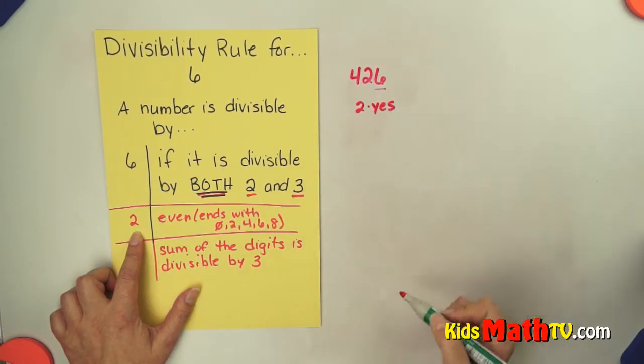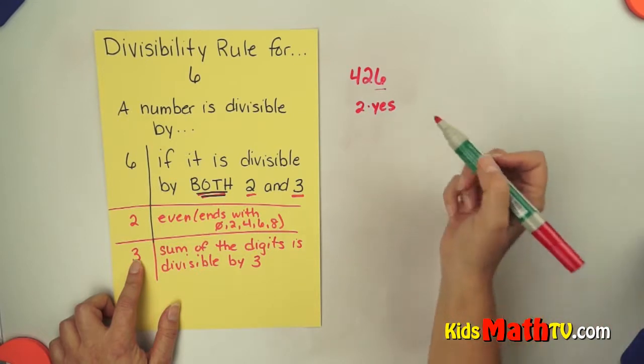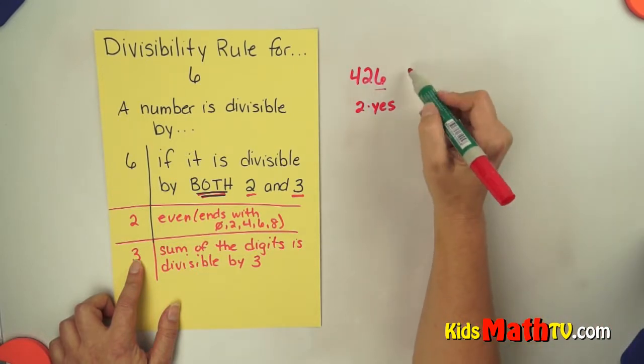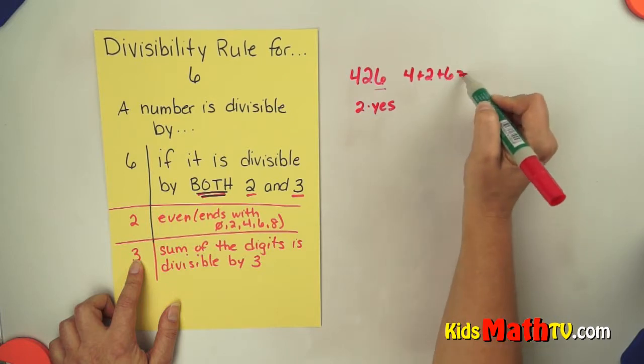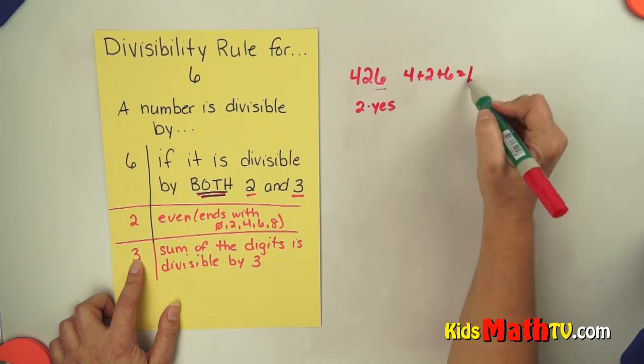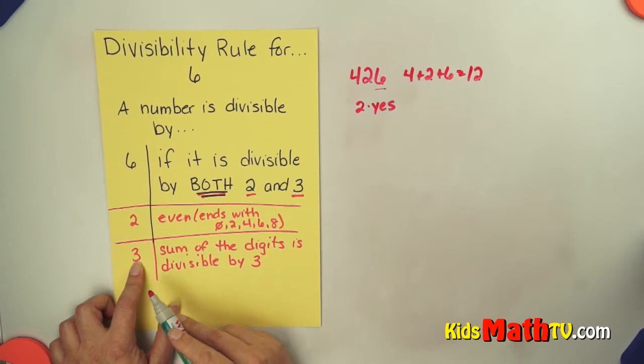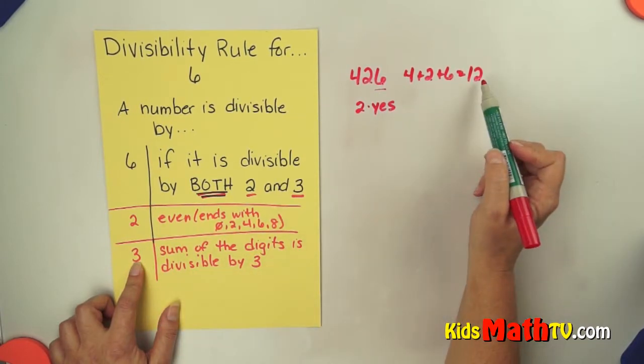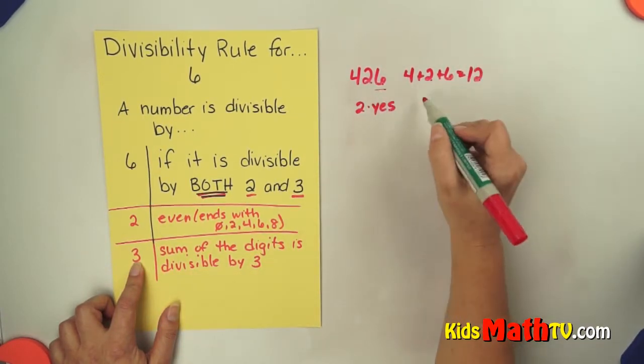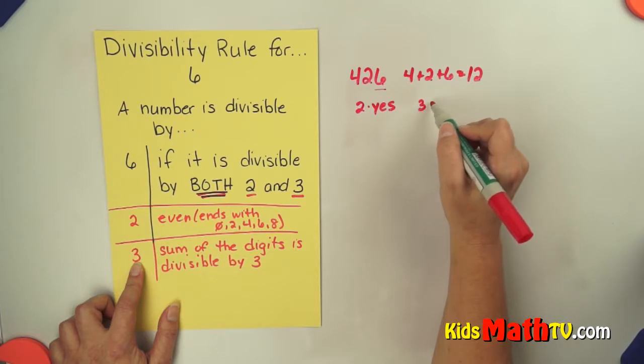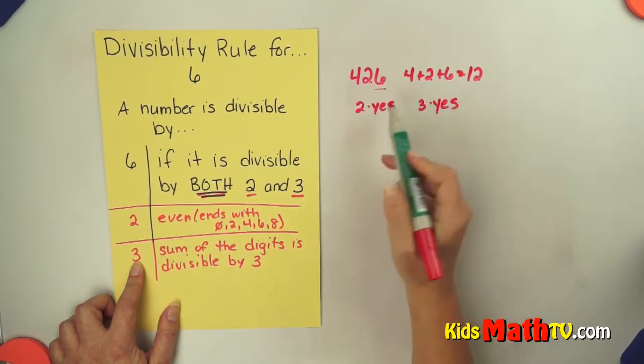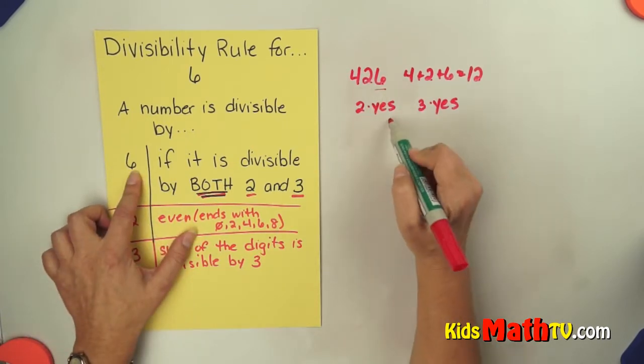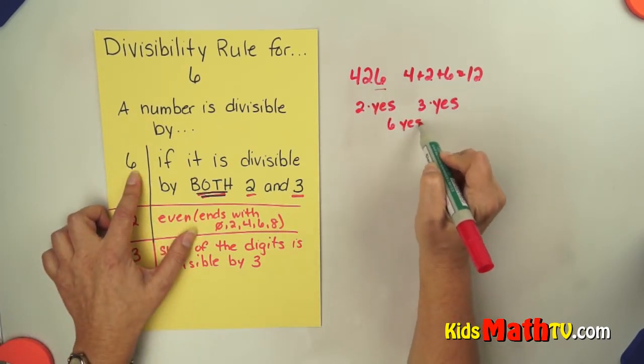But it also has to be divisible by 3. So the rule for 3 is I add the digits 4 plus 2 plus 6. And if I add that together I get 12. 12 divides by 3 evenly. So 426 divides by 3 evenly. So it's divisible by 2 and it's divisible by 3. So it is therefore divisible by 6.